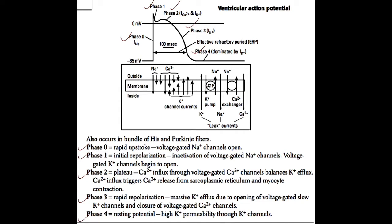At the end of phase three, the effective refractory period ends, meaning the cell can then undergo another action potential. But during the effective refractory period, the cell is unable to undergo another action potential. Phase four is dominated by potassium flux. Potassium comes into the cell via the sodium-potassium ATPase, and sodium is leaked from the cell through leak currents. The permeability of the membrane for potassium is highest at phase four compared to the other ions.